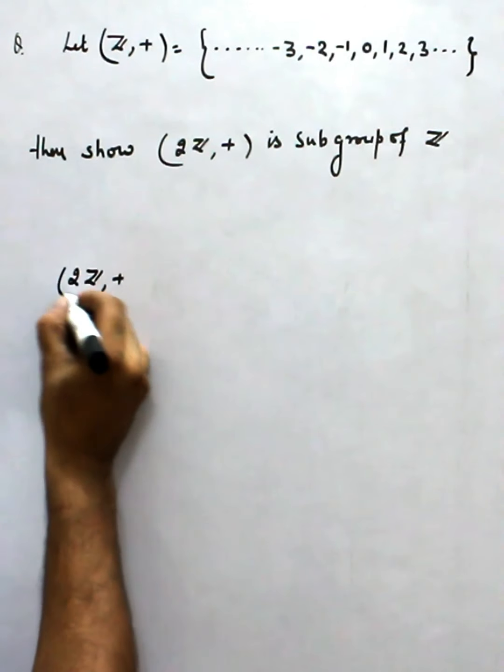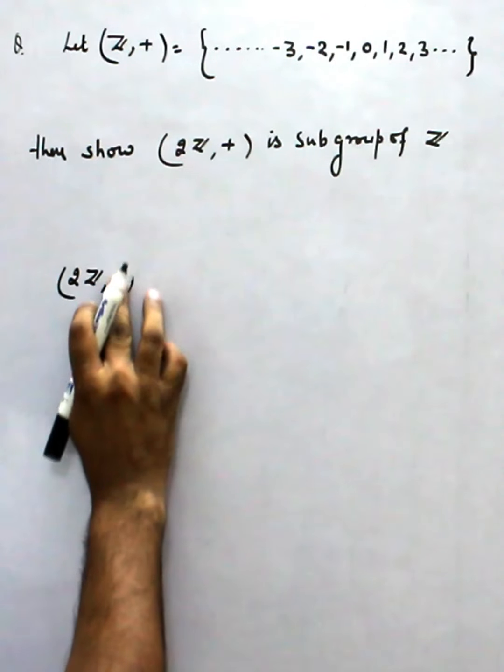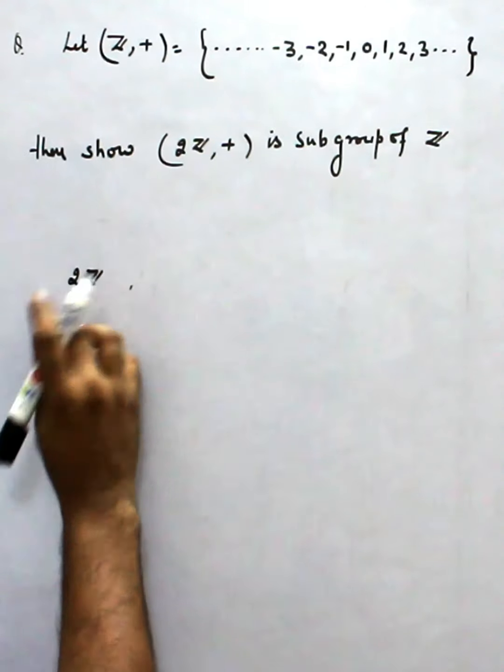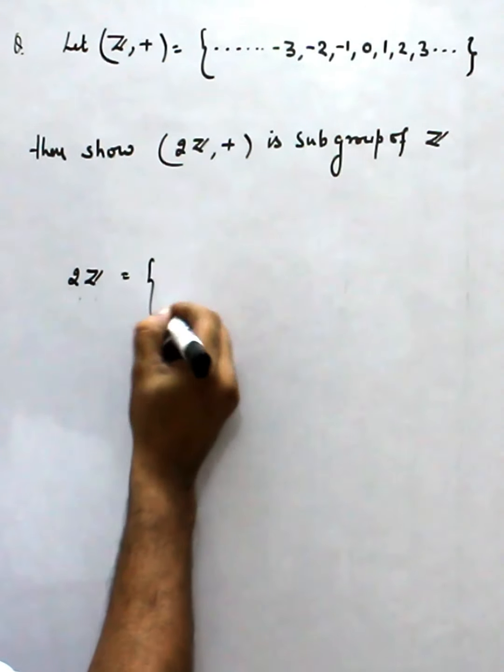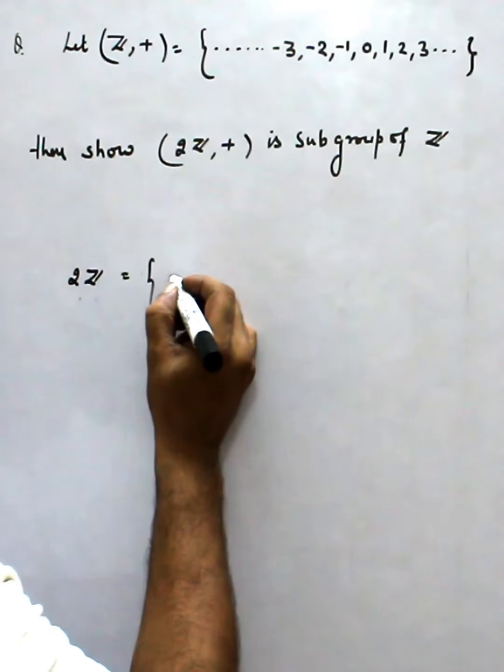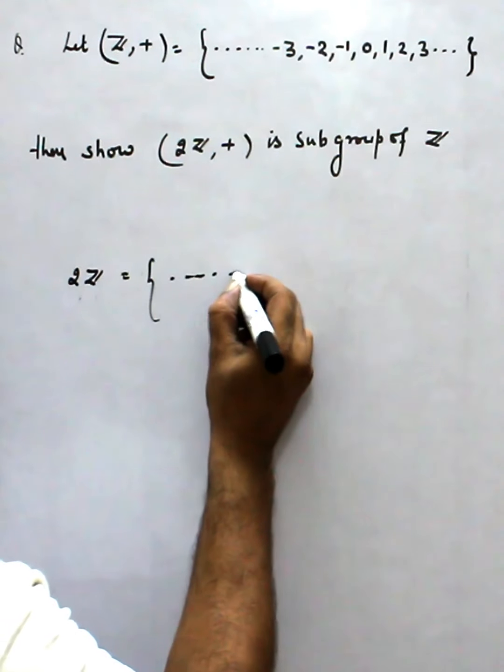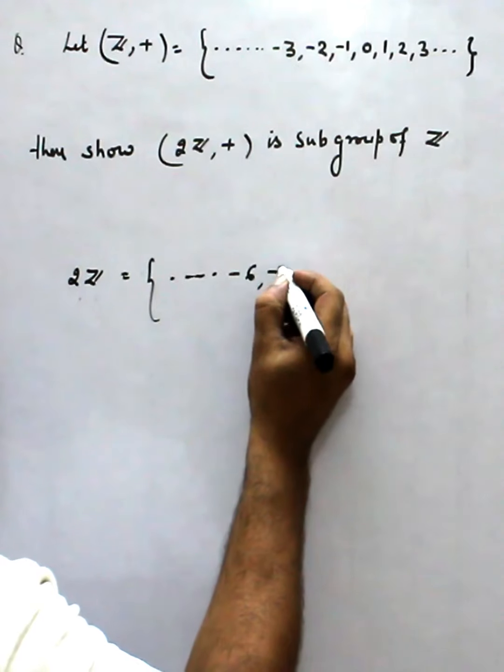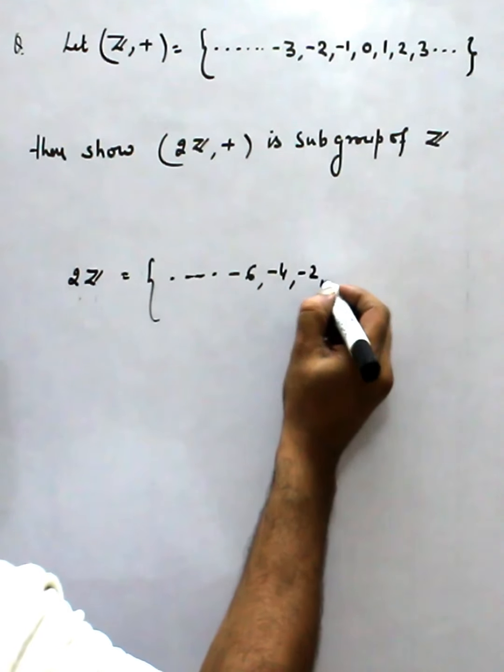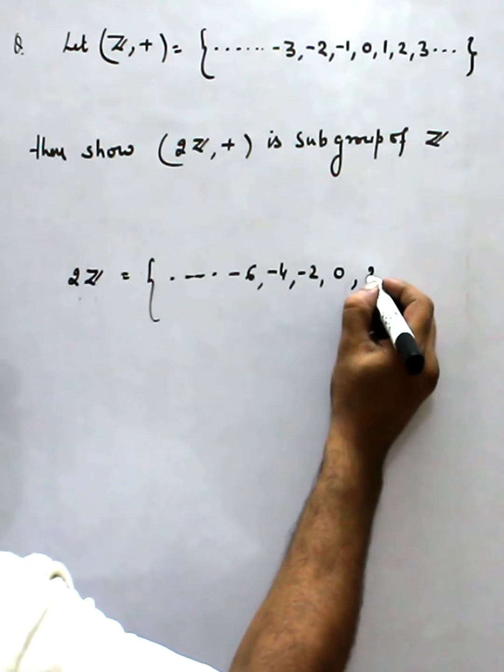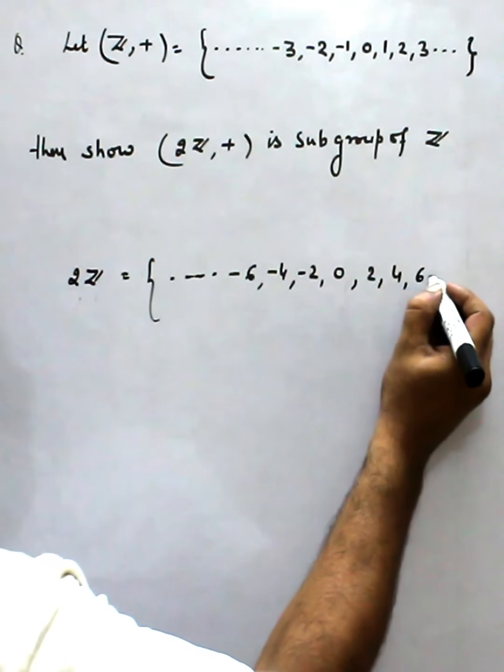Obviously 2Z, this set has elements minus 6, minus 4, minus 2, 0, 2, 4, and 6.